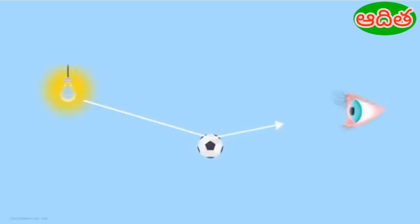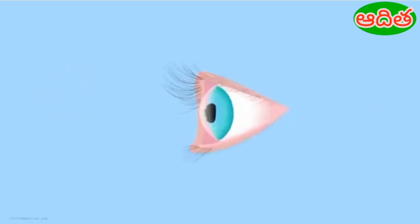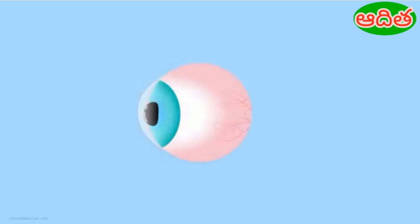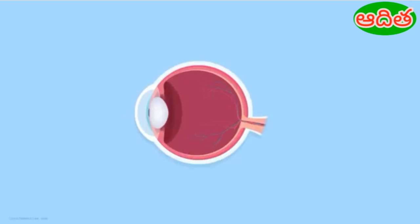We learned that objects are visible because of the light getting reflected from their surfaces. This reflected light enters our eyes and we see that object. What happens inside the human eye when the light rays enter it? What is it that helps us see the things around us? The human eye is roughly spherical in shape. In this video we are going to understand the different parts of the eye in short, not in extreme detail. Let's begin.